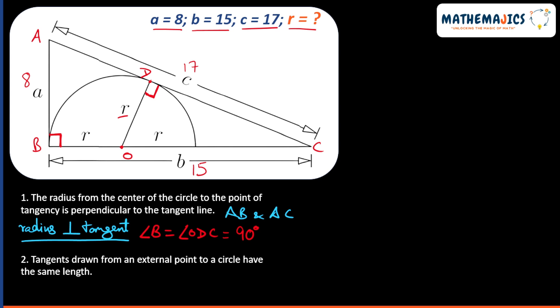We will be using one more property of tangent and circle. Tangents drawn from an external point to a circle have the same length. In this case, which are these two tangents? These two tangents are AB and AD.